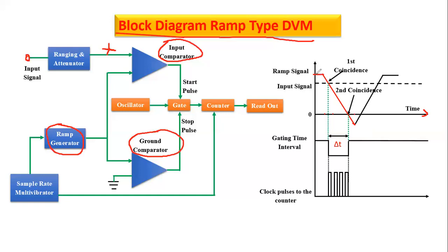The negative going ramp signal is given to the comparator. This is the input comparator. When will the ramp and input be together? As the ramp signal reduces, at some point the ramp signal value equals the input signal X. When the two signals coincide, it is called the first coincidence — when X equals Y (the ramp). Then the input comparator turns on and gives a pulse called the start pulse. This start pulse opens the gate. The gate is a digital logic circuit which turns on and off.